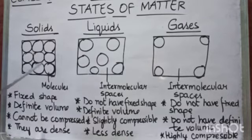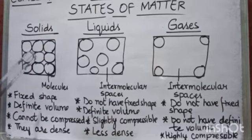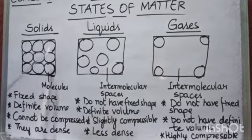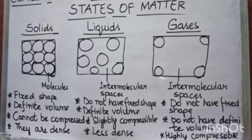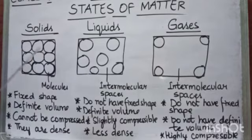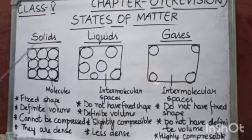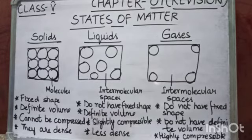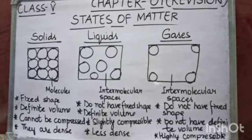In solids, as you can see, molecules are tightly packed. The spaces or gaps between the molecules are known as intermolecular spaces. In solids, there is no intermolecular space between the molecules, so they have a fixed shape and their shape doesn't change. They also have definite volume because of the arrangement of molecules. And they cannot be compressed — if force is applied, solids cannot be compressed.